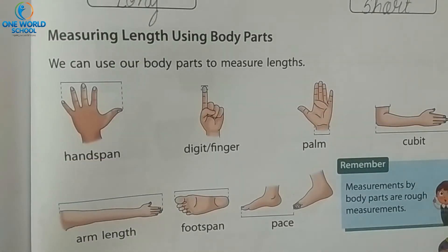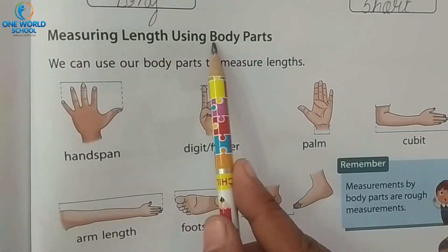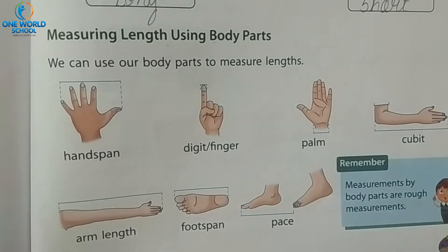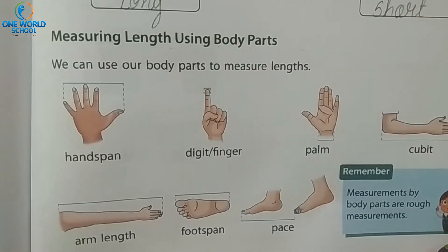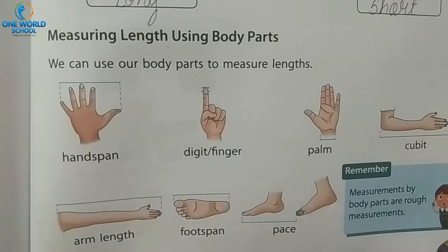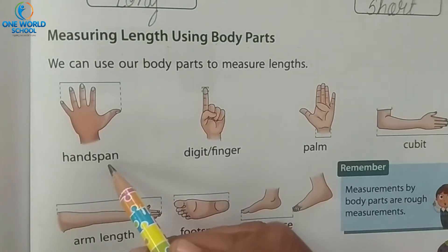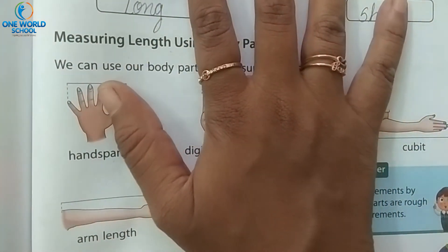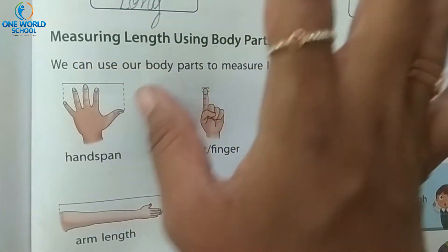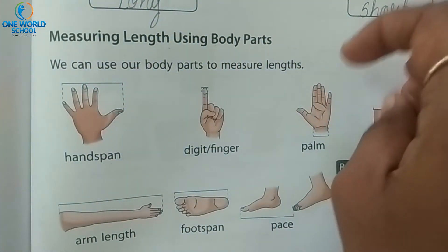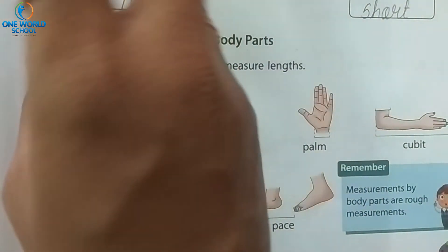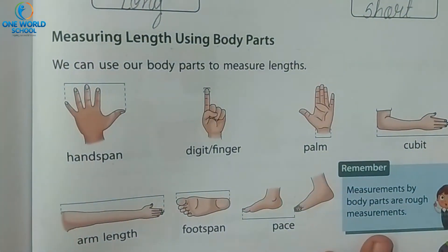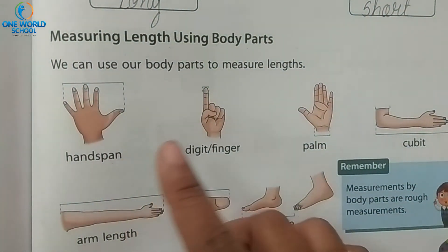Next is measuring length using body parts. We can also measure length with our body parts. First one is hand span — we can measure length using our hand like this, one and two. It is known as hand span.